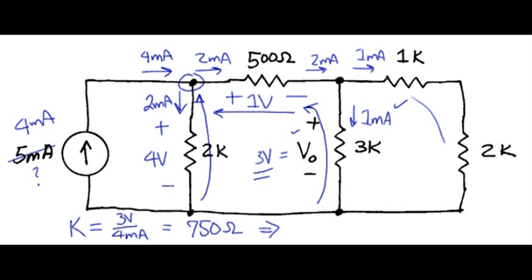So then if we apply our actual current source, 5 milliamps, to that proportionality factor of 750, we find that the voltage is 3.75 volts.